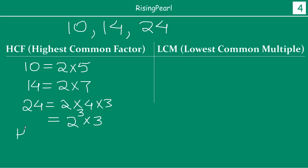For the HCF of 10, 14, and 24, I look for the common factor. Between 10 and 14, 2 is common, and 24 also has 2. However, 5 exists only in 10; 7 exists only in 14; and 3 exists only in 24. So 2 is the only common prime factor. The powers of 2 are 1, 1, and 3 respectively — we pick the lowest, which is 1. So the HCF is 2.